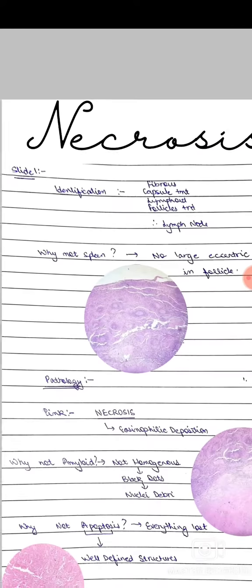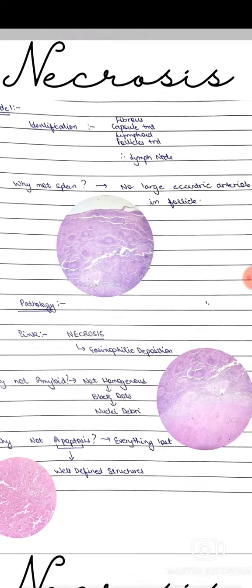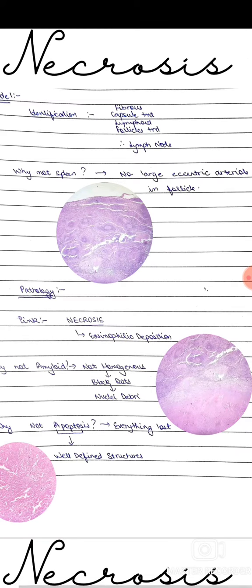But why is it not the spleen? Because there is no large eccentric artery in the follicle. So now, to identify the pathology, we go somewhat further down.